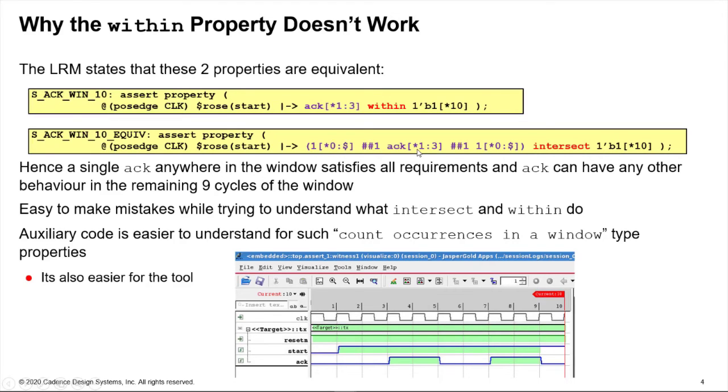Okay, so now you might get an inkling of what's gone wrong here. So a single ack, because we've said a range from one to three, is anywhere within that 10 cycle window satisfies all requirements because I've said zero to an infinite number of cycles can appear on either end of this sequence, which is satisfied.